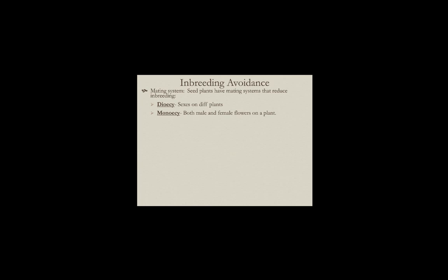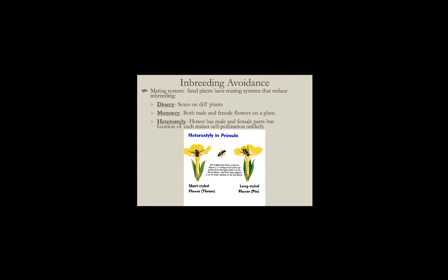In flowers that have both male and female parts, there can also be the evolution of heterostyly, where the anthers and style are placed in different locations that reduces the chance the pollinating insect will cause self-fertilization. Here we see heterostyly in one plant species — some flowers have the anthers way up high, others have the anthers way down low. If a bee visits one type, it's likely just to get pollen from that position and not deposit it on the same flower's stigma.